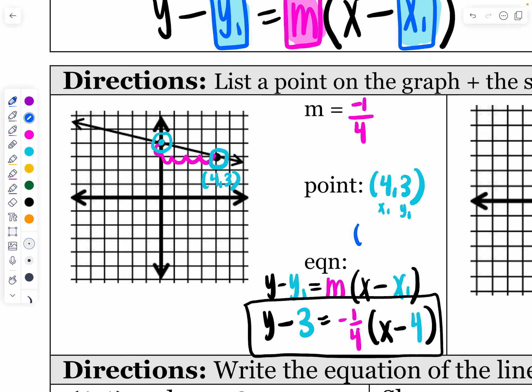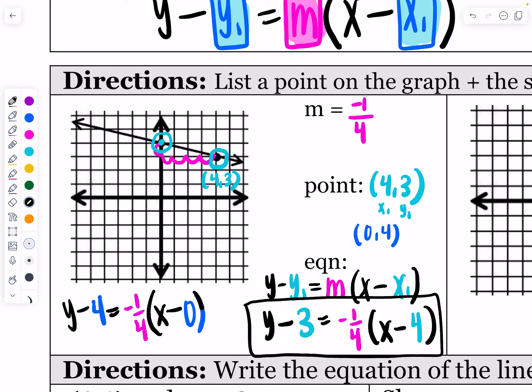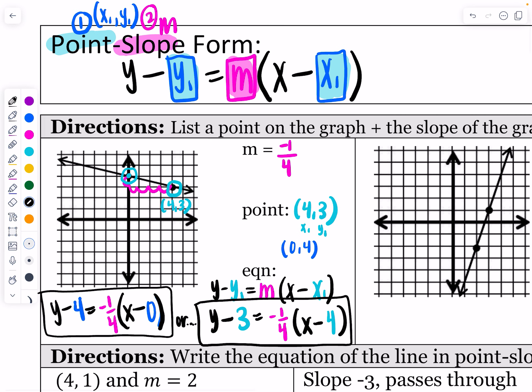We could also use the point (0, 4). That would give y minus 4 equals negative one-fourth times (x minus 0), which simplifies to x. If you use the distributive property to convert either version to slope-intercept form, you get the same equation. Point-slope form is a little bit easier because you can use any point — sometimes the y-intercept isn't a pretty number or doesn't fit on your graph.